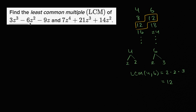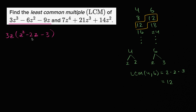For the first polynomial, 3z³ minus 6z² minus 9z, all terms are divisible by 3z, so we factor out 3z to get 3z times (z² minus 2z minus 3). Can we factor the quadratic further? We need two numbers that multiply to negative 3 and add to negative 2 — that's negative 3 and positive 1. So we get 3z times (z + 1) times (z minus 3). Checking: 1 times negative 3 is negative 3, and z minus 3z is negative 2z. That looks good.